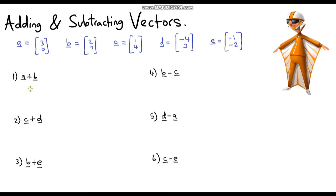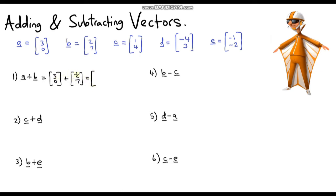With all of that knowledge, I've got some questions for you. Pause the video and see if you can answer these six questions. You've got five vectors — A, B, C, D, and E — and six questions involving calculations with these column vectors. Let's go through them. For vector A plus vector B: vector A is (3, 0) and we add vector B, which is (2, 7). Our horizontal component is 3 plus 2, which is 5, and our vertical component is 0 plus 7, which is 7. So our answer is (5, 7).